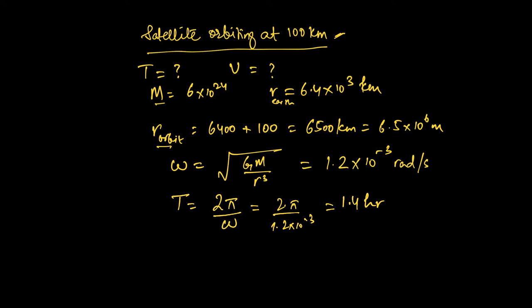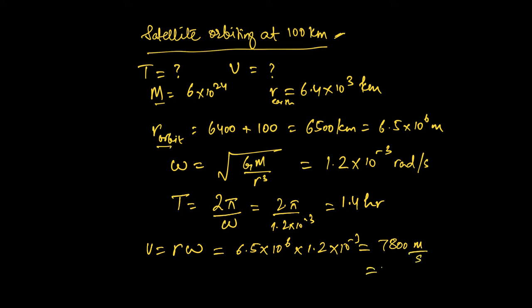To find the linear velocity, use v equals r times omega. Remember, this is the radius of the orbit, not the radius of the Earth. Multiplying by the angular velocity omega gives approximately 7,800 meters per second, or 7.8 kilometers per second. That's moving at quite a speed — 7.8 kilometers per second.